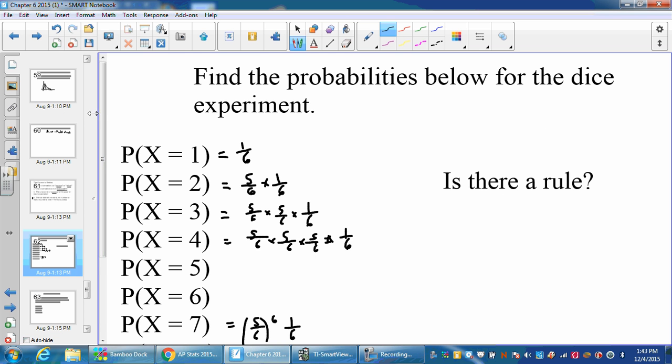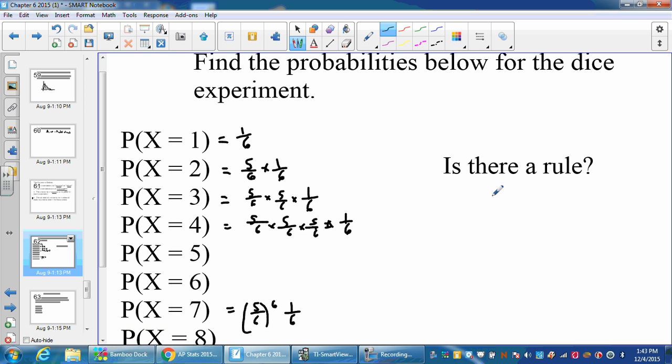And the rule is that you take the probability of failure, one minus p, to the n minus one, and then you multiply it by the probability of success.